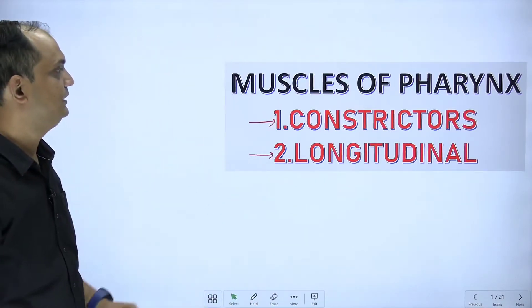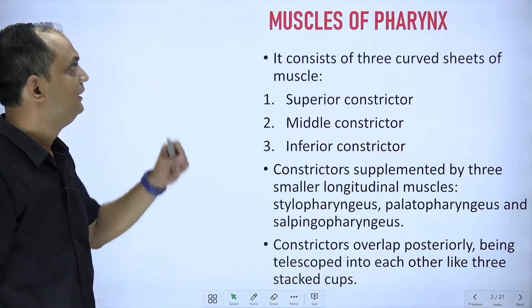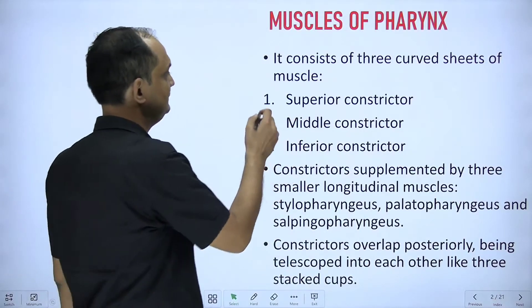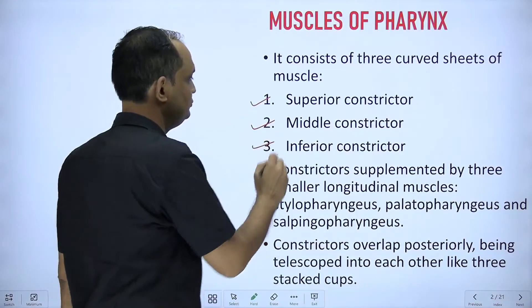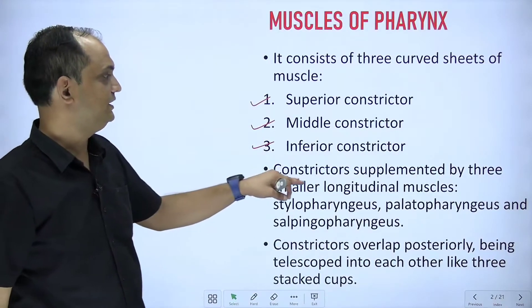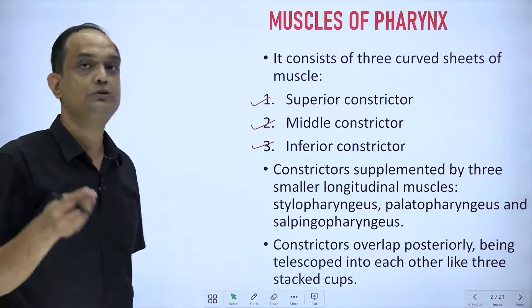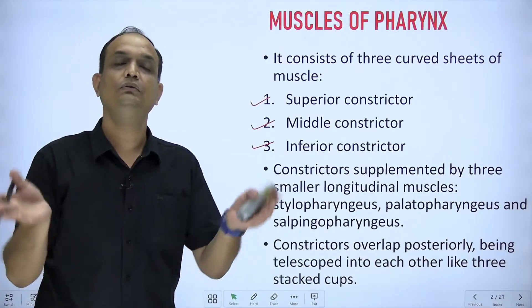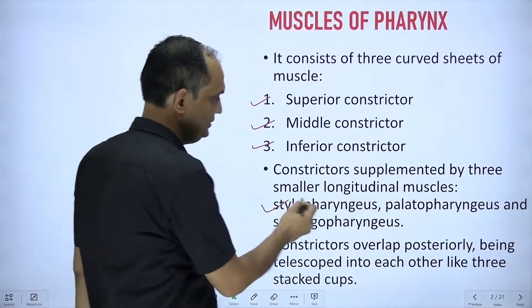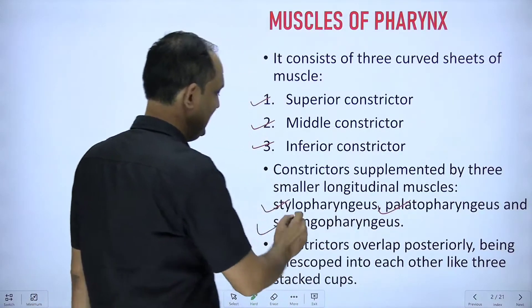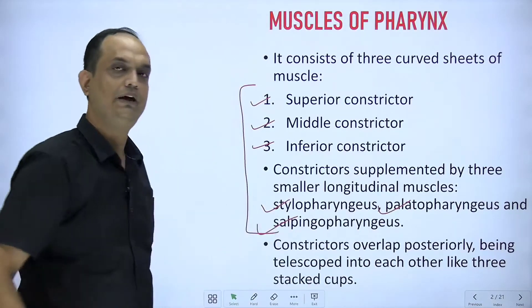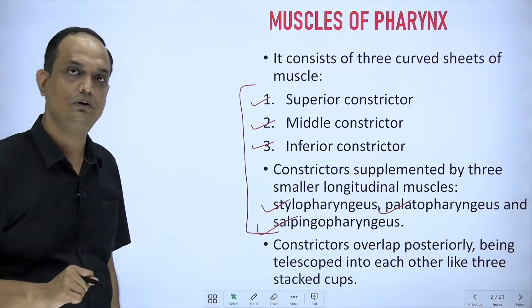There are three constrictors named superior, middle, and inferior from above downward. These constrictors are supplemented by three small longitudinal muscles: stylopharyngeus, palatopharyngeus, and salpingopharyngeus. So there are six muscles in total in the pharynx — three constrictors and three longitudinal muscles.